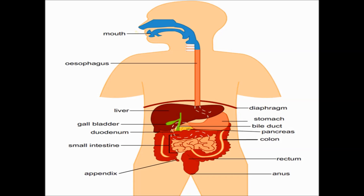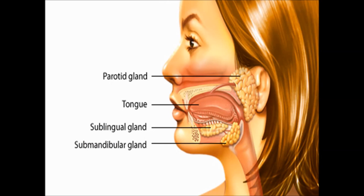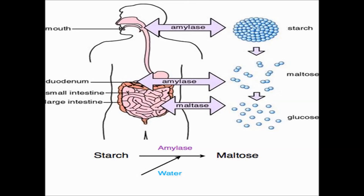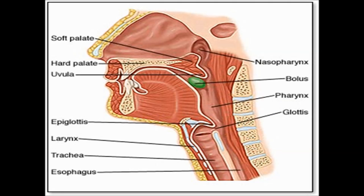The teeth, tongue and openings of three pairs of salivary glands are present in the buccal cavity. The parotid, submaxillary and sublingual glands secrete saliva. The saliva is alkaline and consists of water, salts, mucus and amylase. The amylase converts starch into dextrins, maltose and sugars. The portion behind the tongue is the pharynx, and the tongue pushes food from the pharynx into the esophagus.